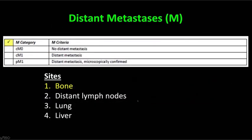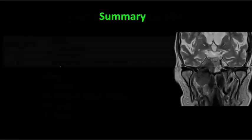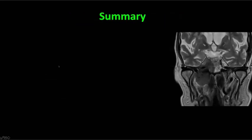The M category is pretty simple. M0 is no distant metastases; M1 are distant metastases. This gives me a moment to note the difference between the P and C prefix: C means clinical — assigned on the basis of the activities of the tumor board and staging — while the pathologist is the one who ultimately makes the final stage, with pM1 being distant metastases microscopically confirmed.